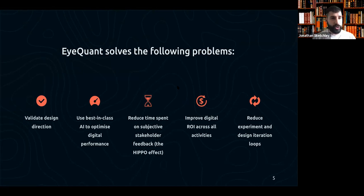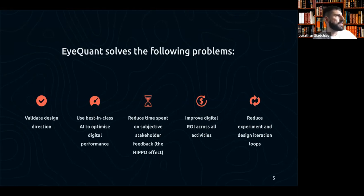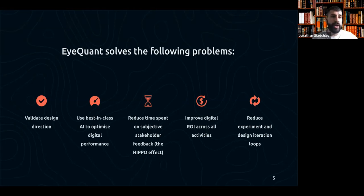Another huge piece of feedback we get is around reducing the time spent on subjective stakeholder feedback — speeding up the sign-off process, working quickly and efficiently, and delivering results. A major benefit is improving digital ROI and reducing the experiment and design iteration loops. We're here to help with your design directions, not to tell you how to design — we're here to nudge and guide but let you have the freedom to create and be as effective as possible.